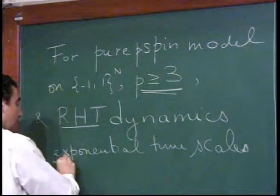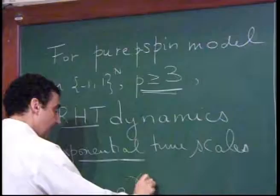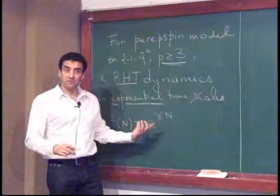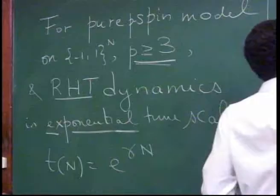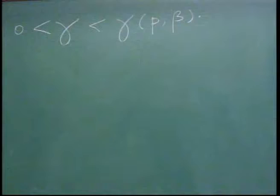The important thing is exponential timescales: my timescales are something like exp(γn), strictly positive γ, but smaller than a γ which depends on P and on the inverse temperature. So you take a long timescale but not too long — you are not yet at the mixing time.